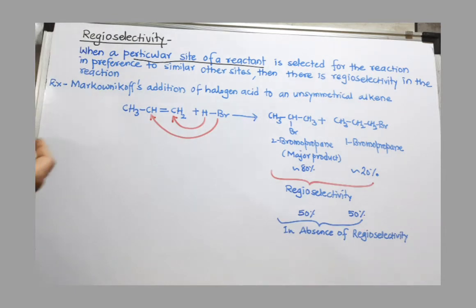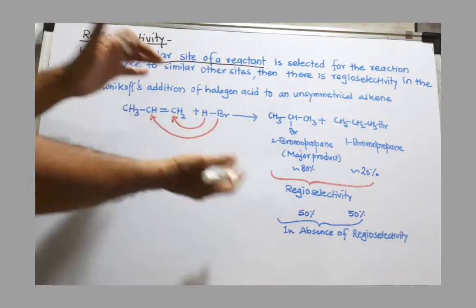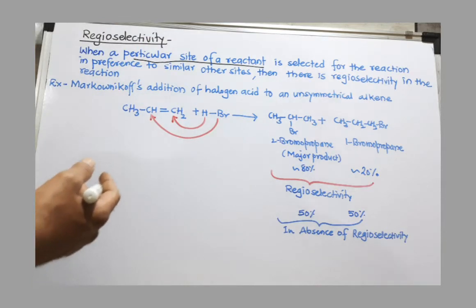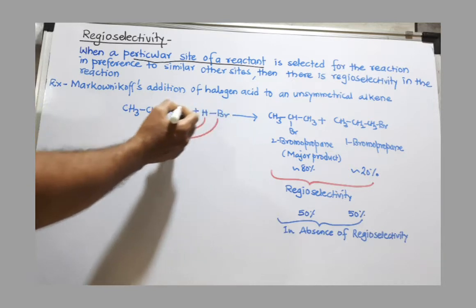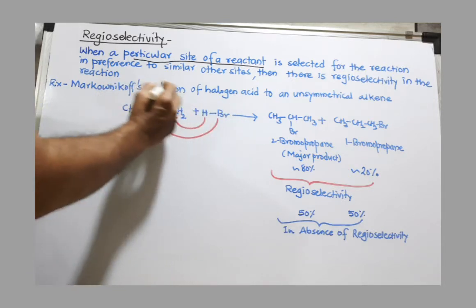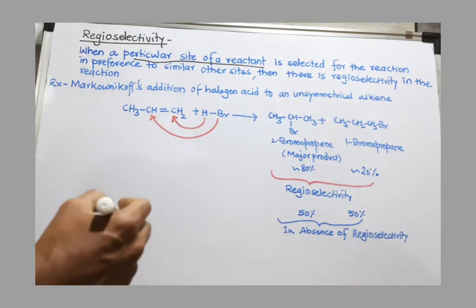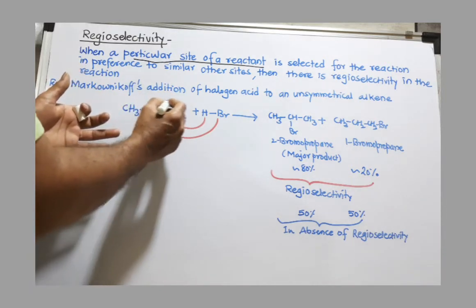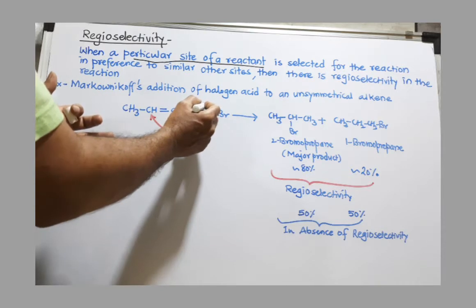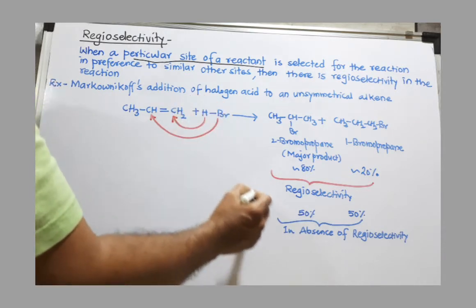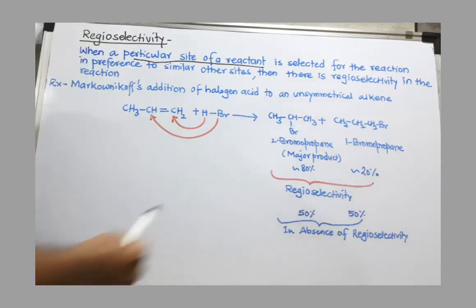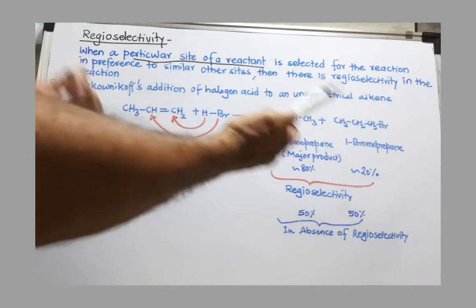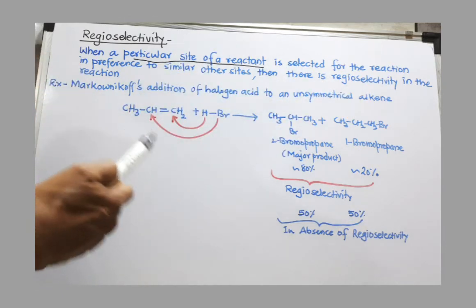We can provide explanation by considering this example. Here you can see addition of hydrogen bromide on this one propyl asymmetric alkyne. If both sites are equally selected by both hydrogen and Br, we will get 50% 2-bromopropane and 50% 1-bromopropane because there are 50-50% chances. But that doesn't happen.